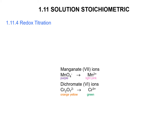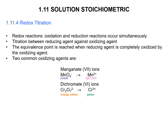The next topic is redox titration. Redox is a process where oxidation and reduction occur simultaneously. The titration is between a reducing agent and an oxidizing agent, and the equivalence point is reached when the reducing agent is completely oxidized. Commonly used oxidizing agents are manganate ion and dichromate ion. The color changes from purple permanganate to light pink, and orange-yellow dichromate turns to green chromium ion.